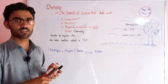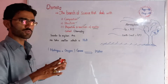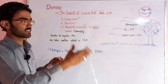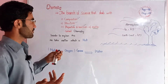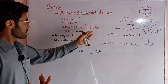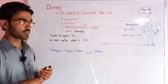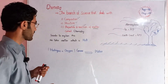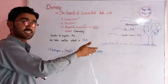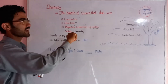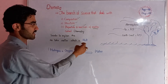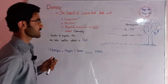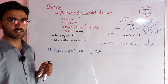یہ definition آپ نے mostly books میں دیکھی ہوگی۔ اب ہم اس کو interesting way میں explain کرنے کی کوشش کرتے ہیں۔ Matter بطور H2O لیتے ہیں — یہ water کا formula ہے۔ اس کی composition کے اندر کیا ہے وہ ہم نے study کرنا ہے۔ Symbolic representation ہمیں بتاتی ہے کہ اس کے اندر hydrogen اور oxygen gas ہے — یعنی ہم نے matter کی composition کو study کر لیا۔